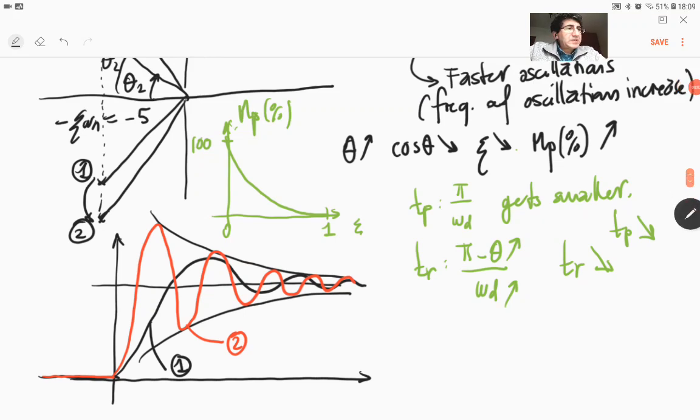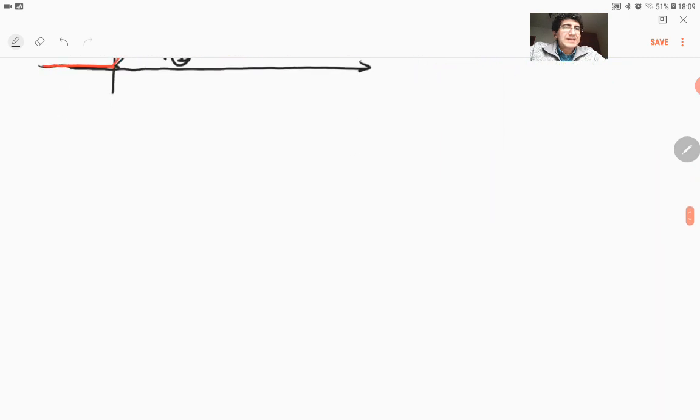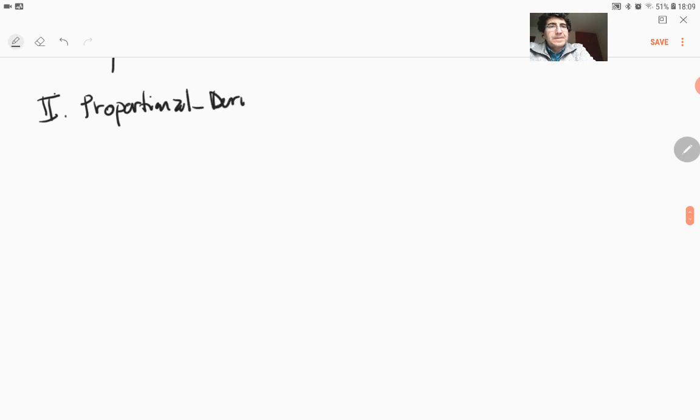Okay, so let's continue our discussion with what happens as we move on to proportional derivative controller. So that means we are adding a new term, the derivative term, and we want to see what's happening with the derivative term.